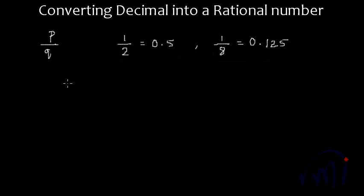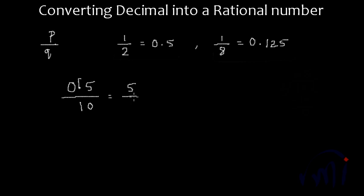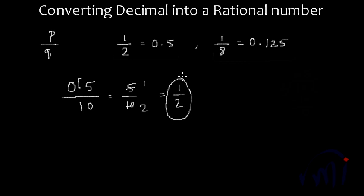There is a way to convert a decimal number into a fraction. If we have 0.5, first we draw a division bar, then we remove the decimal. In place of the decimal, I put a 1, followed by zeros equal to the number of digits appearing after the decimal. Since we have only one digit — 5 — after the decimal, I put only one zero. So it becomes 5 by 10. Since 5 and 10 have a common factor of 5, I divide both numerator and denominator by 5, giving 1 by 2.